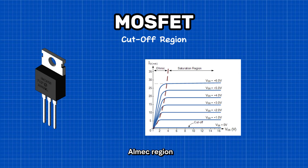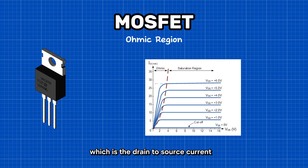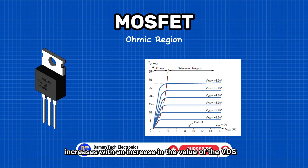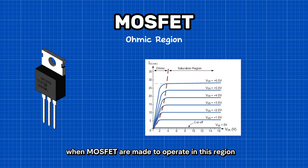Two: ohmic region. The ohmic region is a region where the current IDS, which is the drain-to-source current, increases with an increase in the value of VDS, the drain-to-source voltage. When MOSFETs are made to operate in this region, they are used as amplifiers.